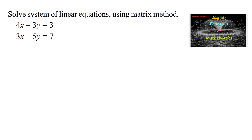Solve a system of linear equations using the matrix method. The given system of equations is 4x minus 3y equals 3 and 3x minus 5y equals 7.